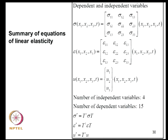We assume the structure behaves linearly, with material that is isotropic, elastic, and homogeneous within an element. The governing equations from 3D linear elasticity: the state of stress at any point (X1, X2, X3) is given by the stress tensor, the state of strain by the strain tensor, and the displacement fields are U1, U2, U3—all functions of X1, X2, X3, and time. There are 4 independent variables and 15 dependent variables: 6 stress components, 6 strain components, and 3 displacements.